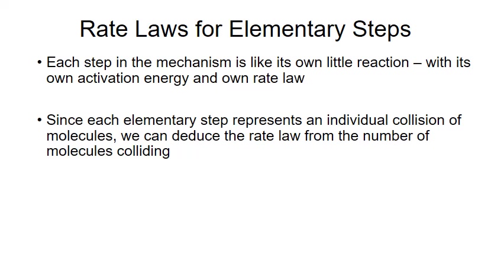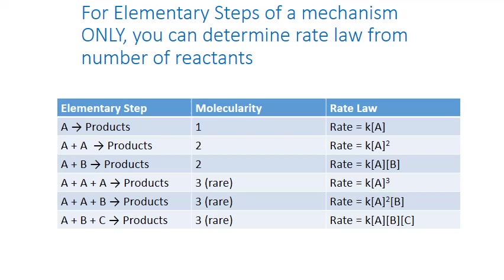Each elementary step in the mechanism has its own associated activation energy and rate law. Since each elementary step represents an individual collision of molecules, we can predict the rate law simply from the number of molecules colliding. For example, one molecule of A decomposing is a unimolecular step, and the rate law associated with it is first order — it depends only on the concentration of that one molecule. The coefficient on A in the elementary step becomes the exponent on the concentration in the predicted rate law.